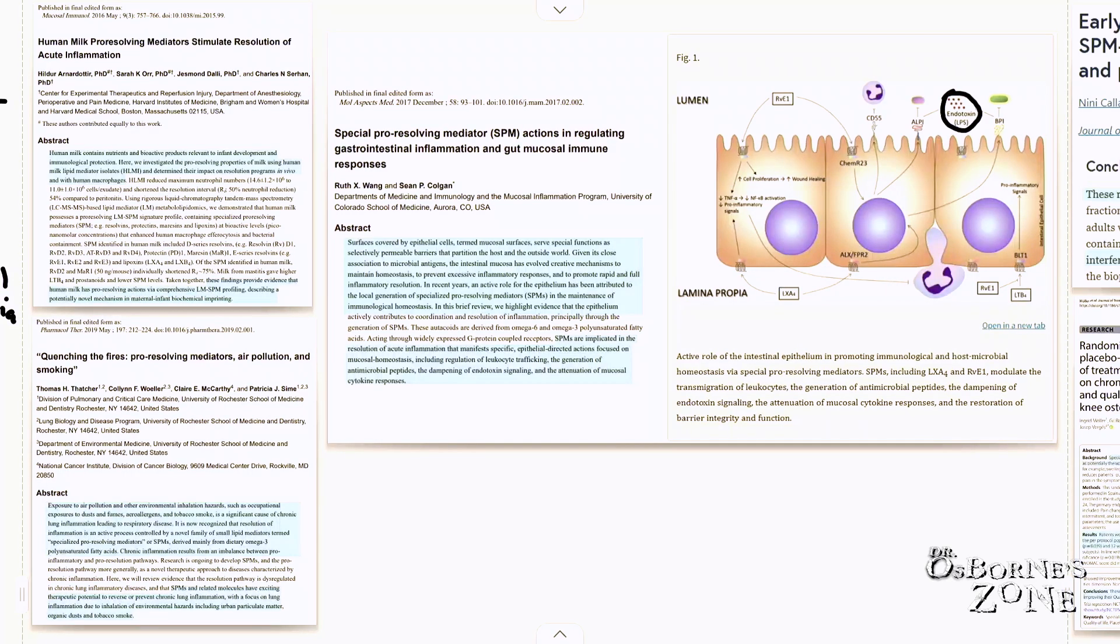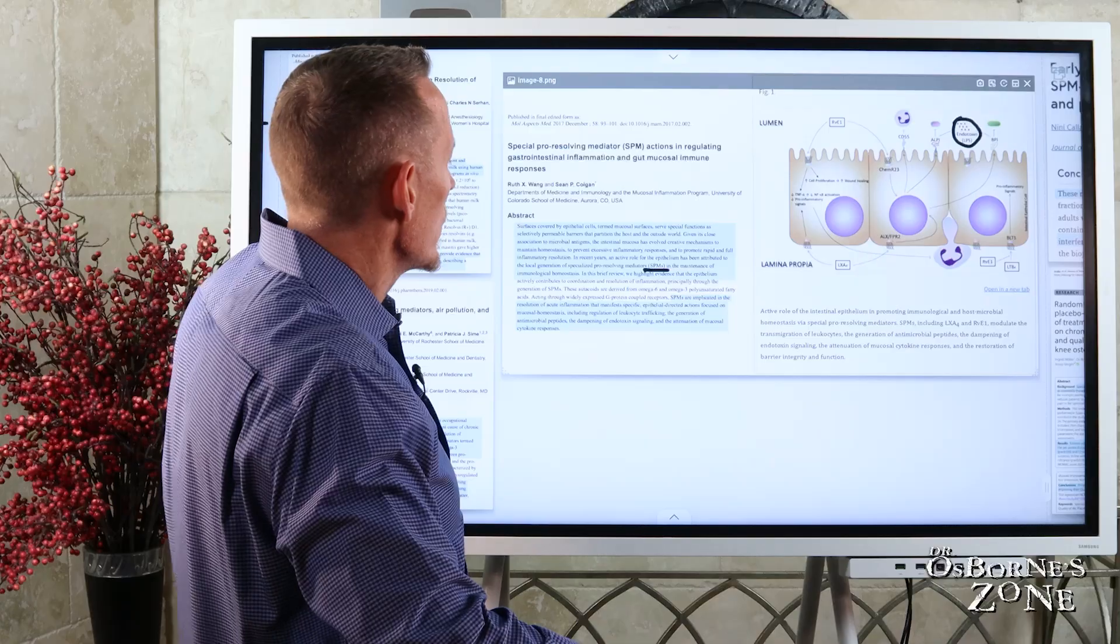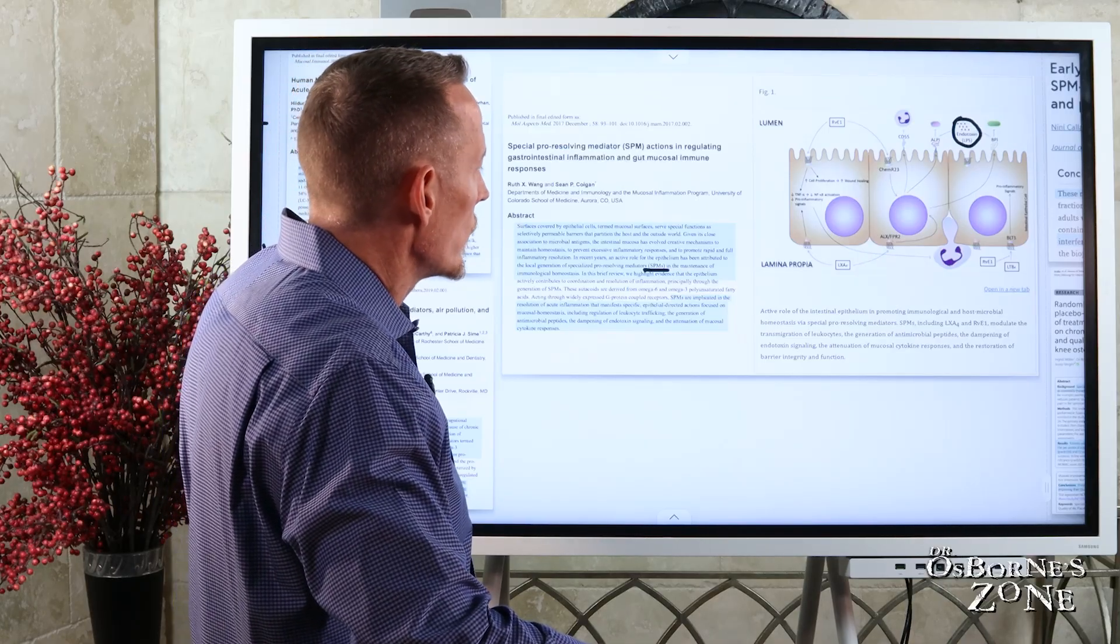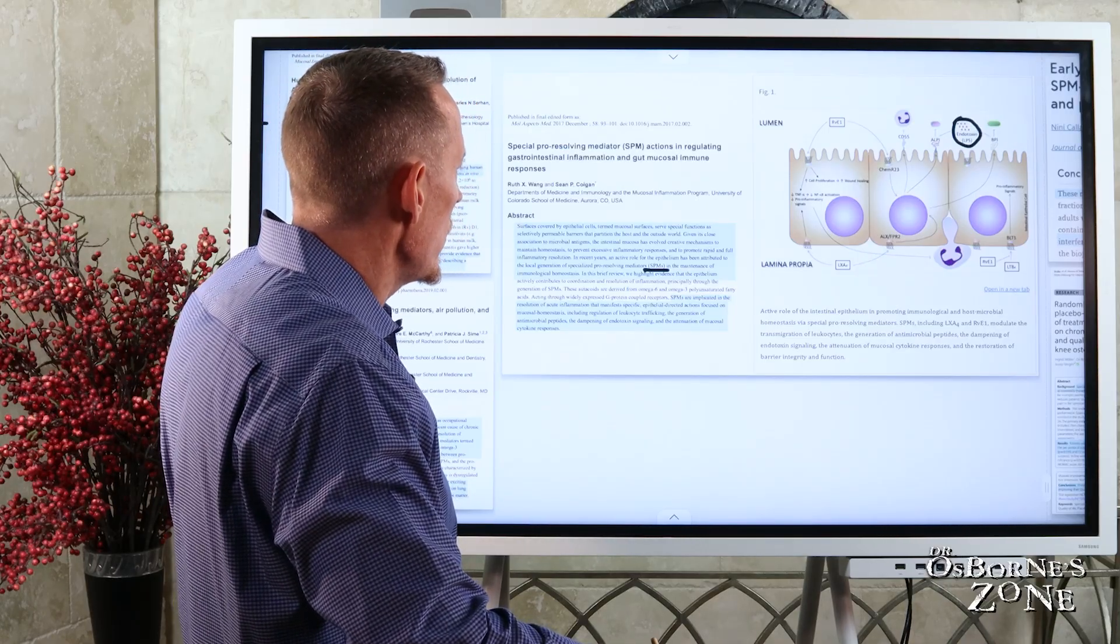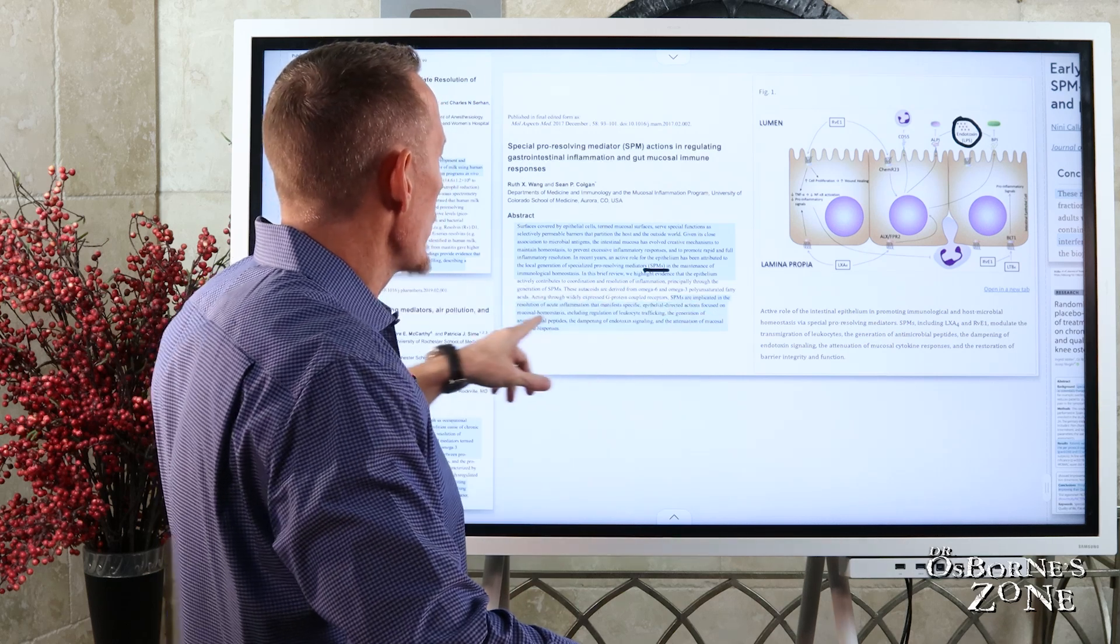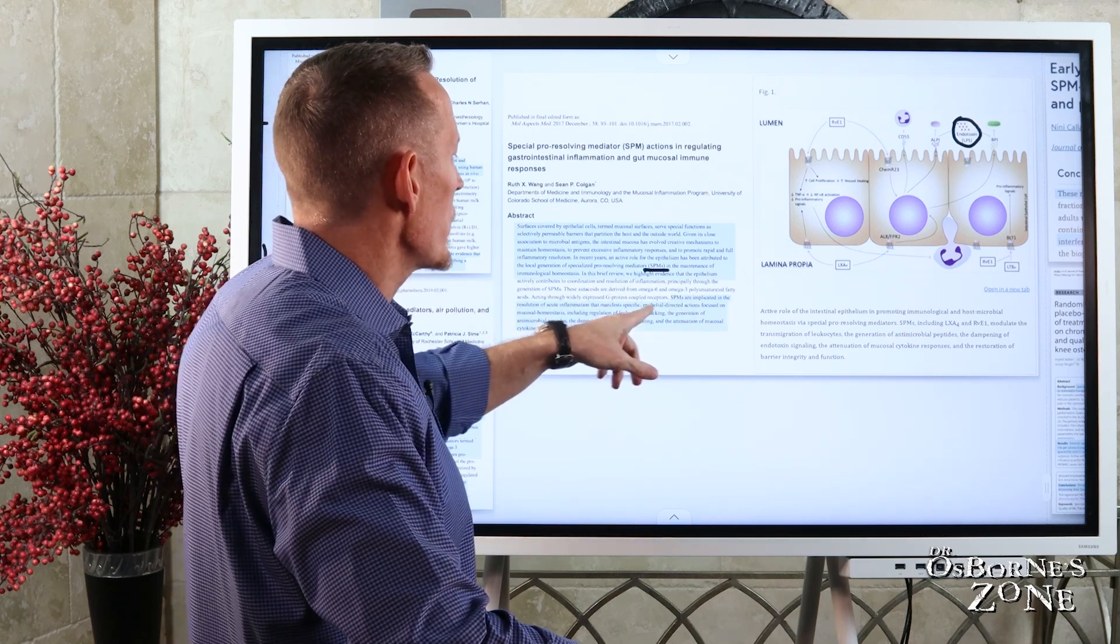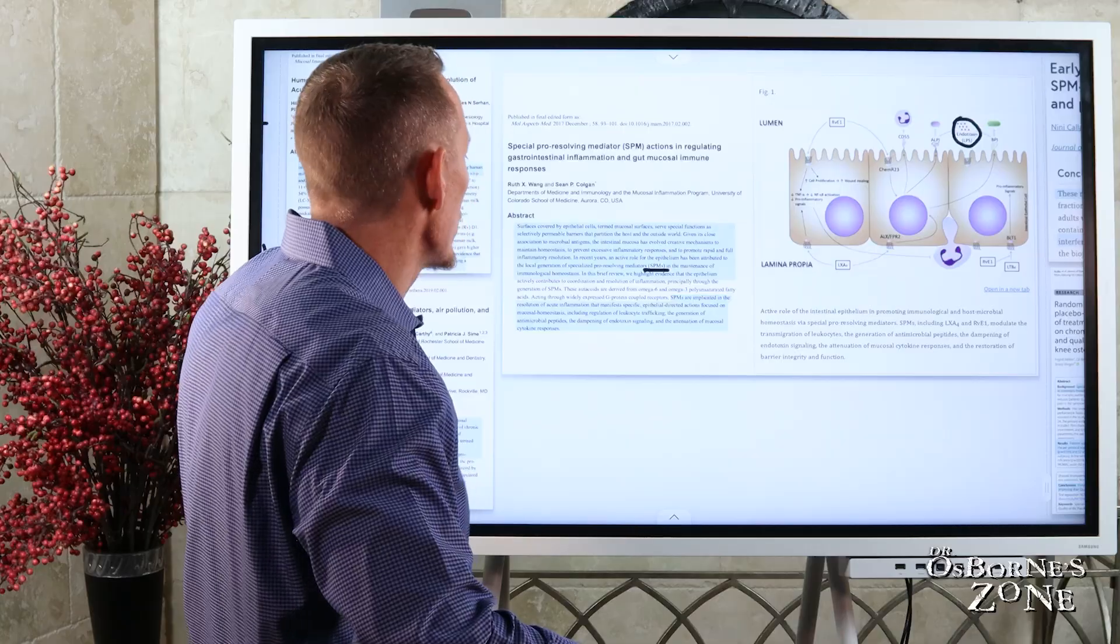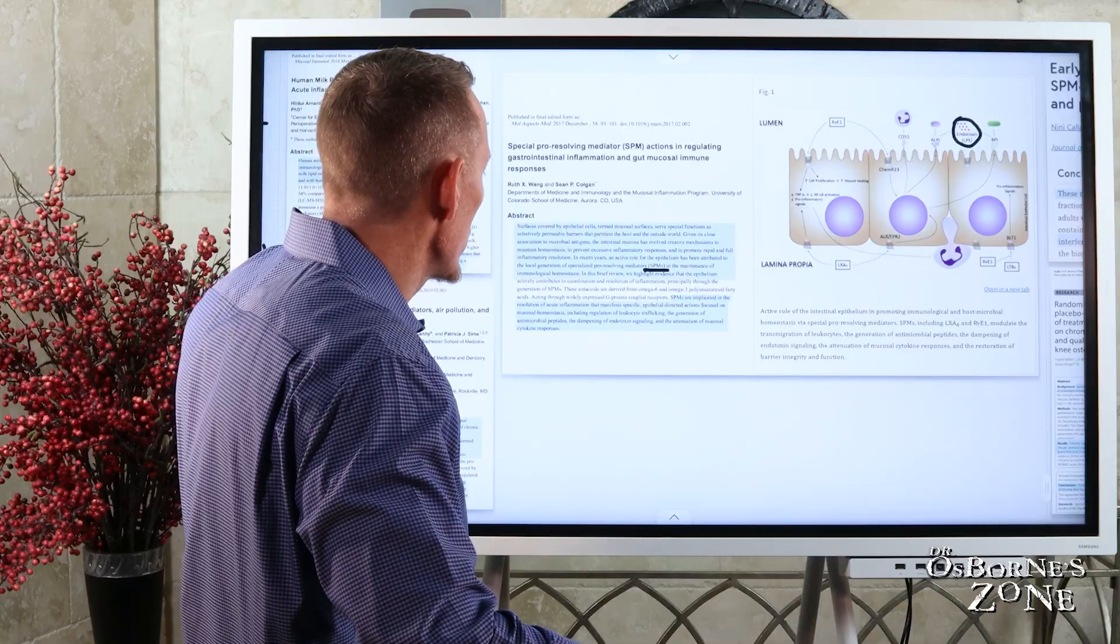In recent years, an active role for the epithelium has been attributed to the local generation. In other words, your gut cells can generate SPMs on demand in the maintenance of immunological homeostasis. Basically, they're using SPMs to regulate the inflammation in the tissue. So you can see SPMs are implicated in the resolution of acute inflammation that manifests specific epithelial-directed actions focused on mucosal homeostasis,